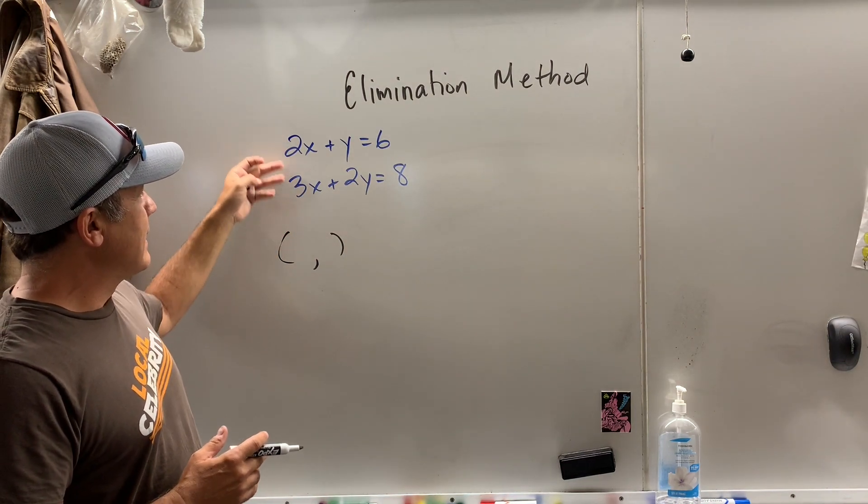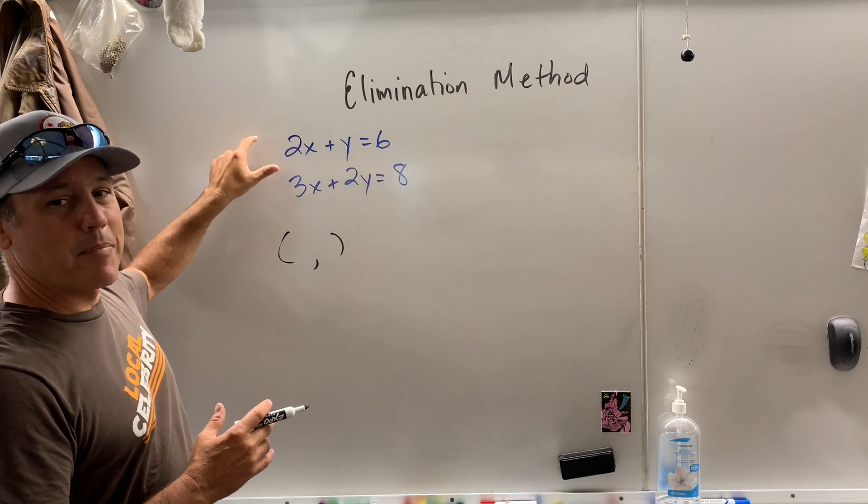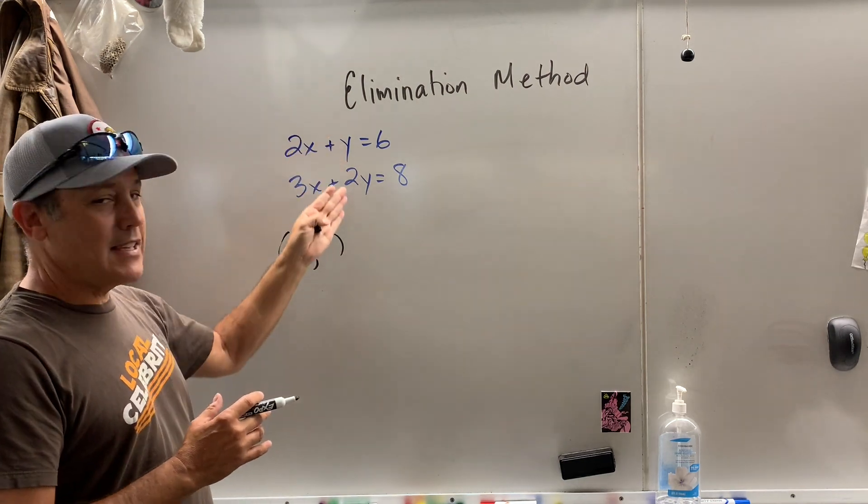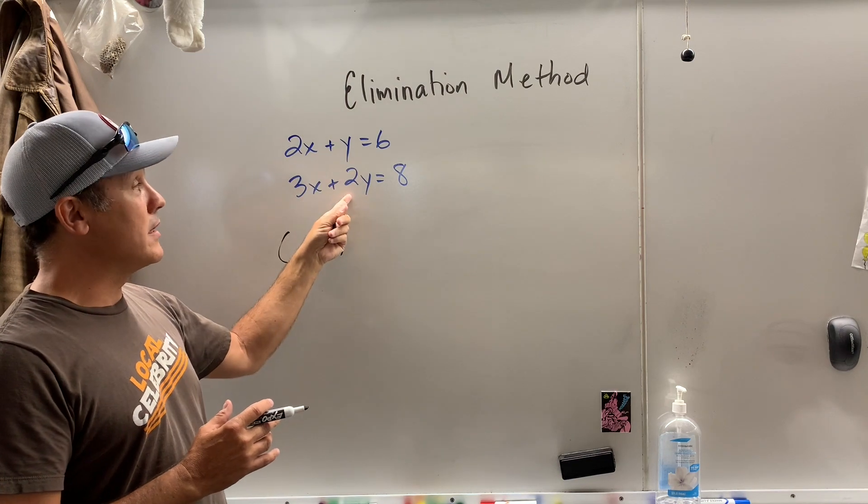See, two and three, I don't know, I got to manipulate top and bottom. What can I do to the y? So when I add these together, I'm going to eliminate the y's.